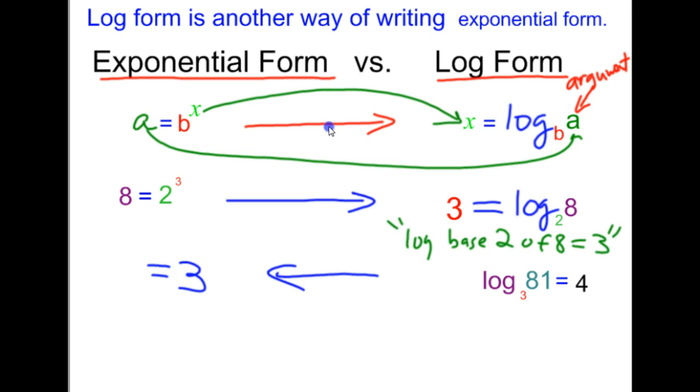Notice that the word log has to disappear when you go to exponential form. There's my equal sign. Well, in this case, now, the argument will go back and become the answer, and the answer will come back and become the exponent. Remember, the argument and the answer always have to switch places with each other, flipping sides of where they were at with their base. So log base 3 of 81 is the same thing as 81 equals 3 to the fourth power.